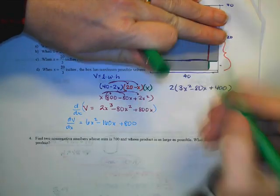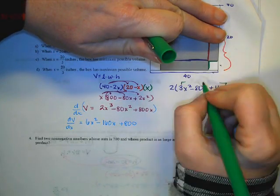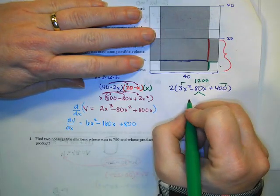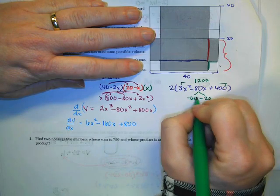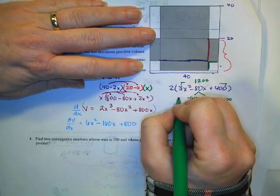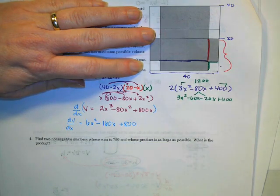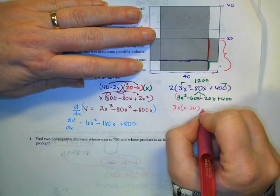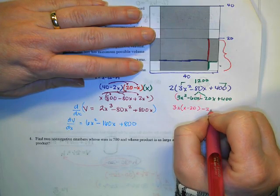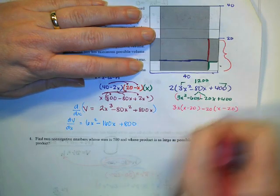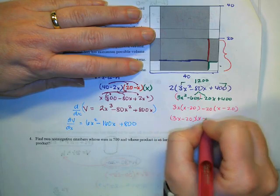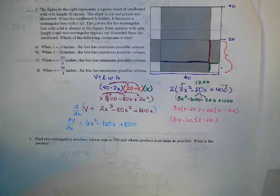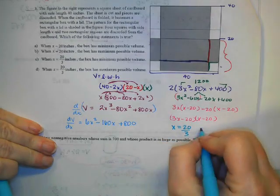So now I'm factoring. I multiply 3 times 400 and I get 1,200. Looking for factors of 1,200 that would equal 80. So that would be negative 60 and negative 20. So 3x minus 20 and x minus 20 are my two factors.